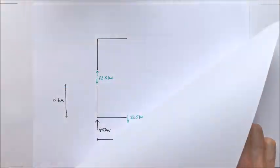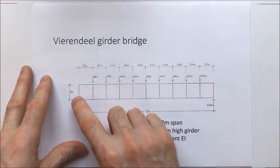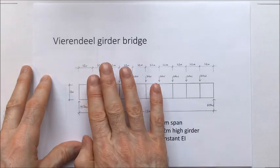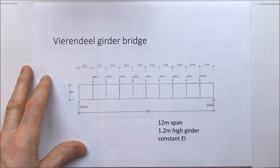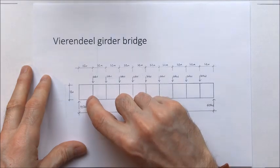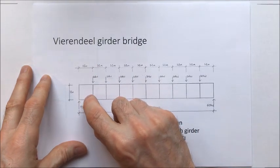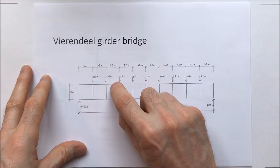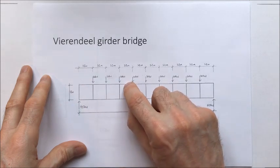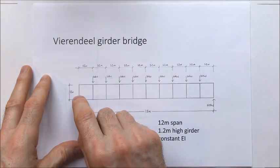And we chose points of contraflexure to use as the edges of our little subframes along the length of the Vierendeel girder. So what I want to do now is I want to start at this left hand side, so I'm going to create some subframes by putting in, by taking, creating pins at points of contraflexure